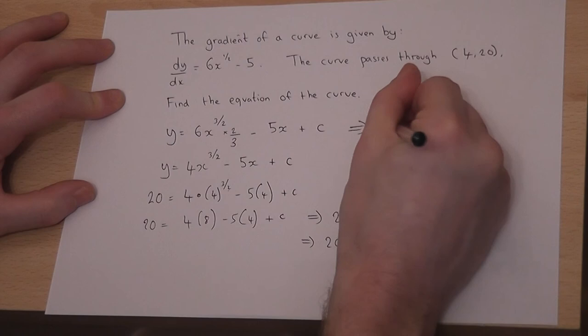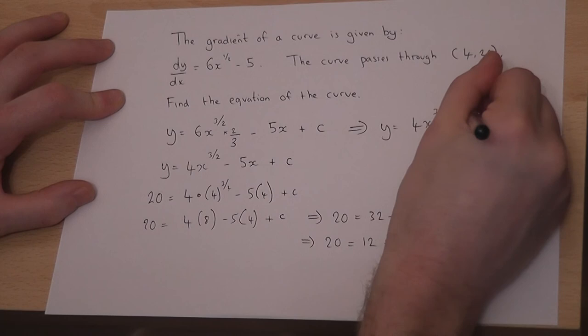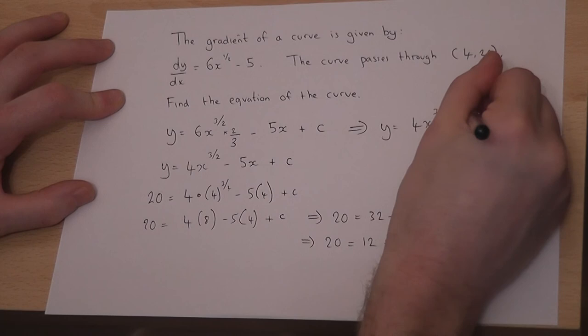So therefore, I know my overall solution, my particular solution, y must equal 4x to the 3 over 2, take away 5x plus 8. That is my particular solution passing through the coordinate (4, 20).